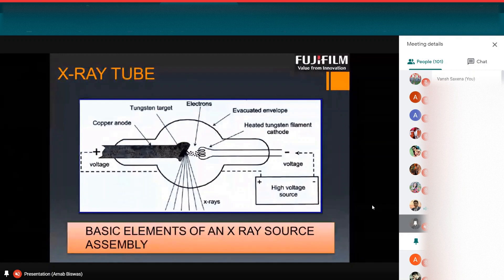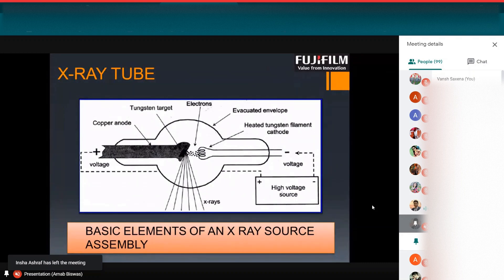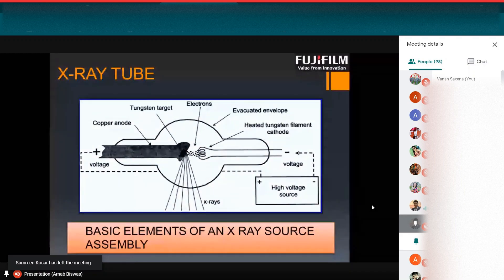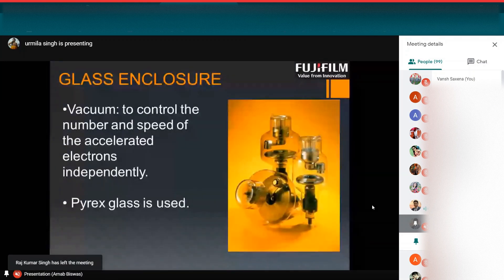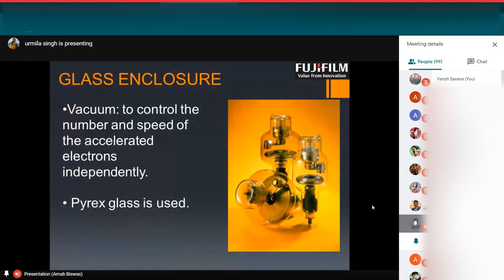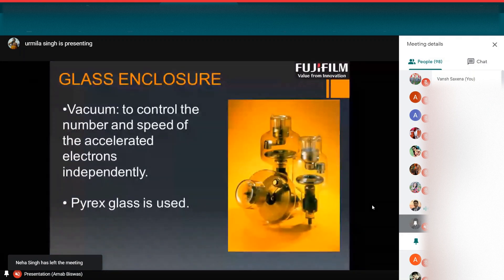This cathode and anode is placed inside an evacuated envelope. Why we place this in an evacuated envelope? Because it is to control the number and speed of accelerated electrons independently, so that the outer atmosphere cannot hamper this situation. Like the outer things like humidity or other electromagnetic waves, these things can hamper the control of the number of processes and accelerated electrons independently. Pyrex glass we use as an envelope, as a glass envelope.